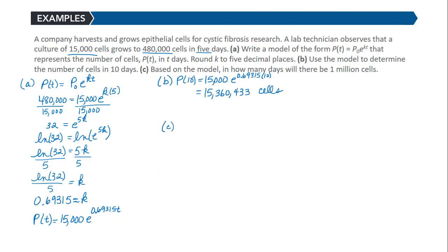Then part C says, based on the model, in how many days will there be 1 million cells? So this is an ending amount and we need to find t. We're using our model P(t) = 15,000 × e^(0.69315t), and we're going to set P(t) equal to 1 million.